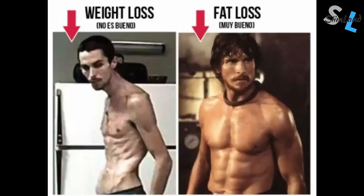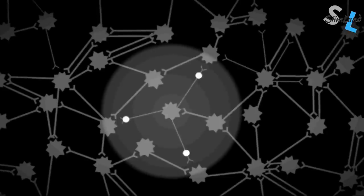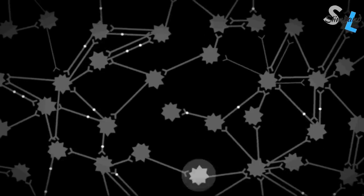Not enough mTOR can actually predispose you to insulin problems and you won't be able to shuttle glucose into the right places. If you have too low mTOR, you won't be able to build muscle, leading to poorer metabolic flexibility and predisposing yourself to disease. mTOR also contributes to neuroplasticity and learning and memory development. mTOR and IGF-1 can actually inhibit age-related cognitive decline, and mTOR also helps to grow synaptic connections.